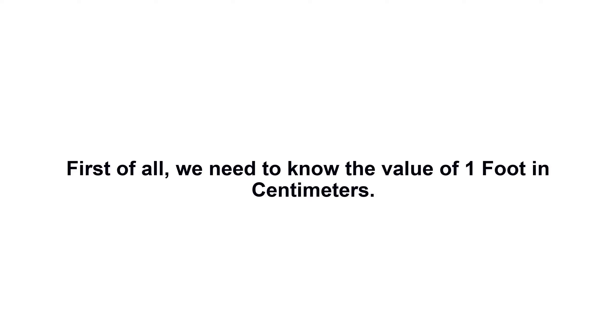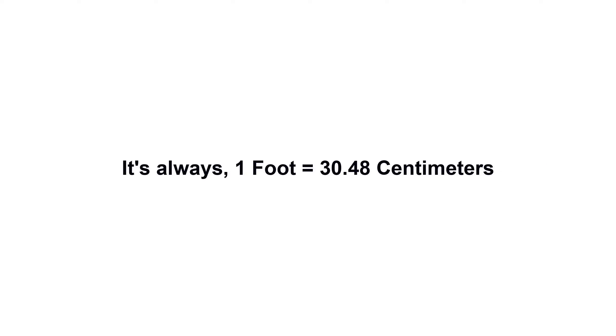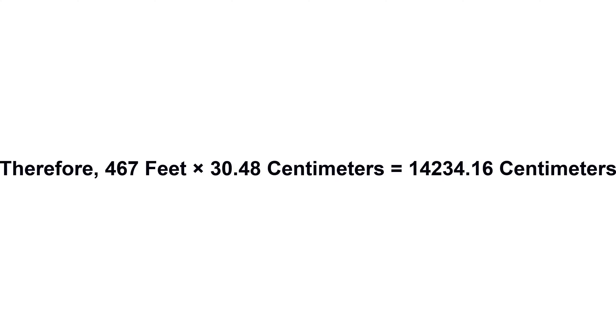467 feet in centimeters. First of all, we need to know the value of 1 foot in centimeters. It's always 1 foot equals 30.48 centimeters. Now we have to multiply 30.48 by 467. Therefore, 467 feet times 30.48 centimeters equals 14,234.16 centimeters.